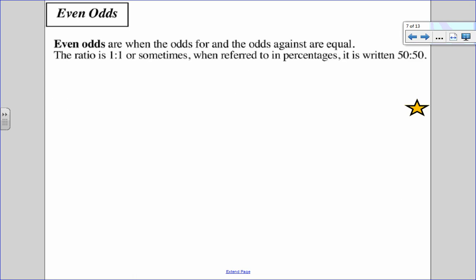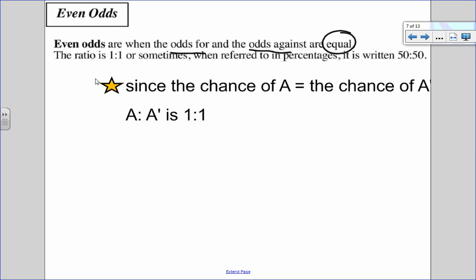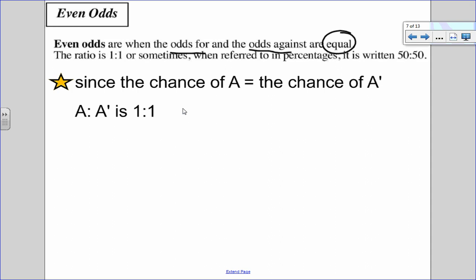Okay, when we talk about odds, sometimes we're going to have even odds. And even odds are when the odds for and the odds against are equal. So it's a one to one ratio, a 50-50 chance. So these are called even odds because the chance of A happening is equal to the chance of A not happening. That's what even odds are.